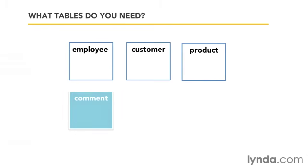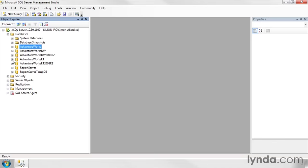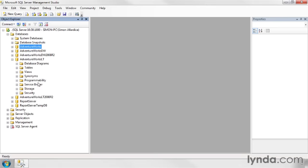Which is: what tables do you need? Each database you make will consist of one or more tables, and these tables are the basic building blocks of a database. You create separate tables for each entity - each object or thing that needs to be represented in your system. Some tables might represent things that exist in the real world, like a customer, product, or employee, but others can be more abstract: a blog entry, a comment, an appointment or event. Each of these tables will contain multiple rows of information, whether that's one employee or a million.